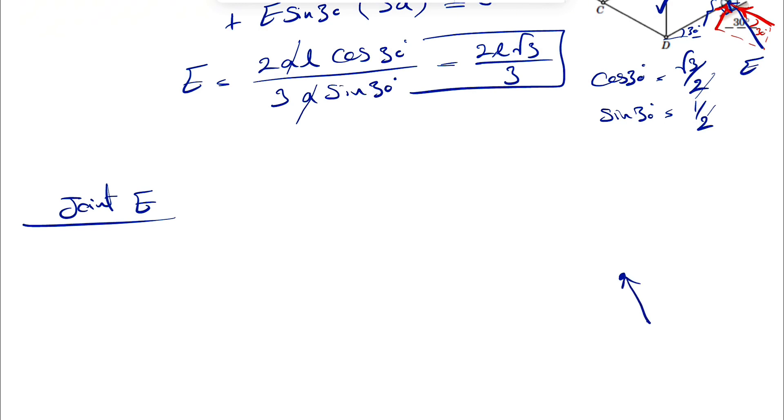Since we have the reactions at that one, we have what we found for E was 2L square root of 3 over 3. We're going to have the member in here, DE, and we're going to have also the member EF. Let's just take a random direction for now. We'll see what happens after if we get a negative sign. We'll figure it out.